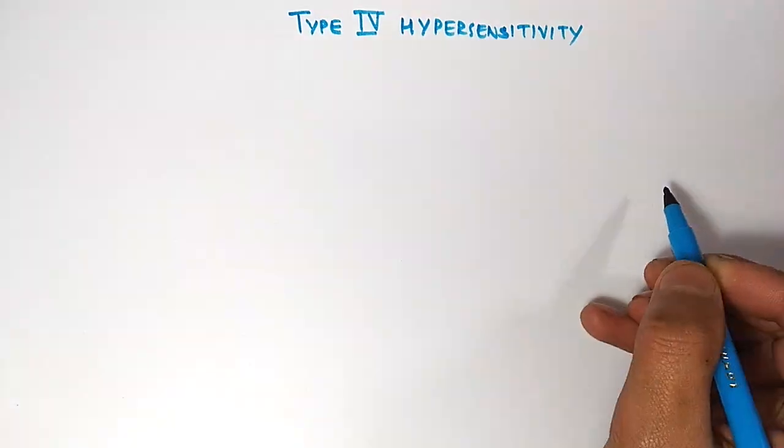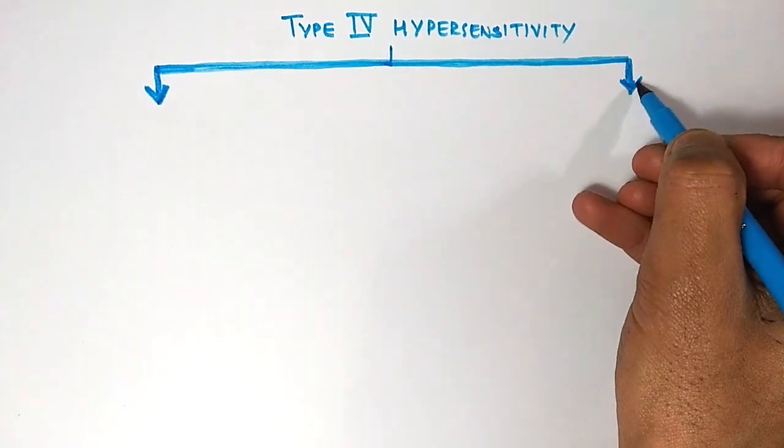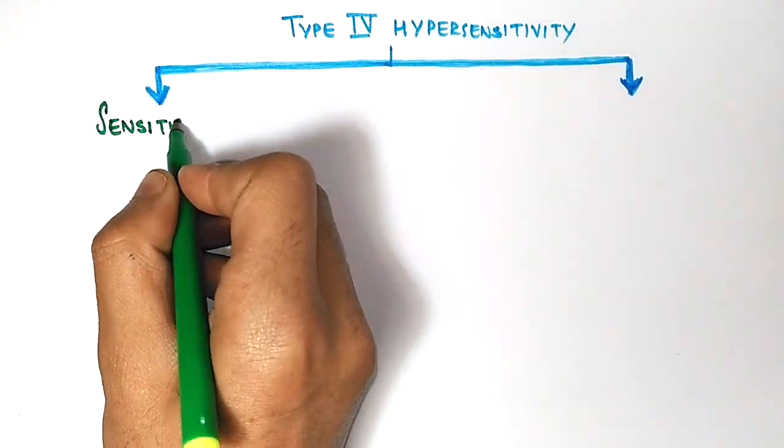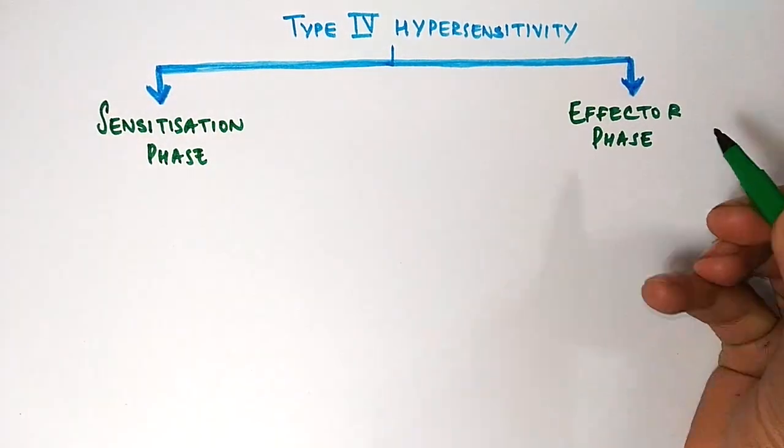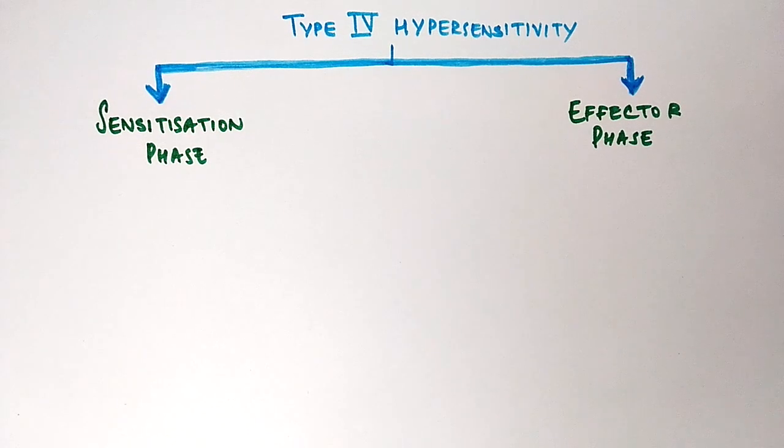We divide this Type 4 hypersensitivity into two phases. First phase is sensitization phase, second phase is effector phase. In sensitization phase we have the sensitization of T cells, and then these T cells have their effect on other types of immune cells, which we call the effector phase. Now let's see how this happens.